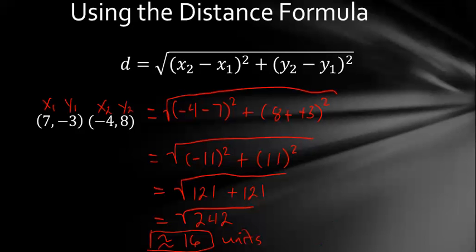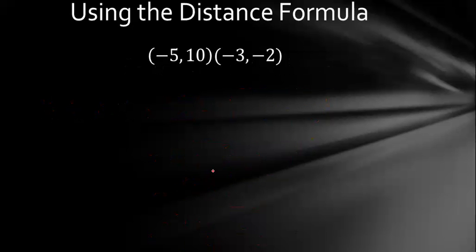Okay, so your turn to try. So take these two points and find the distance between them using the distance formula. Go ahead and pause the video and then unpause it to check if you got the right answer. Okay. You should have gotten that d is about 12 units. If you got that, you're on your way. Now you know how to use the distance formula and the Pythagorean theorem. So go back and try some more problems. Redo your quiz if you have to, but good luck.